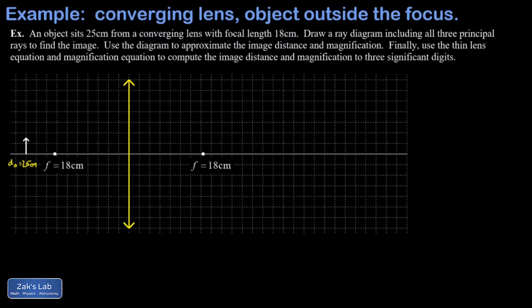We're asked to include all three principal rays, then use the grid to approximate the image distance and magnification. Finally, we'll use the thin lens equation and magnification equation to calculate the image distance and magnification, rounding to three significant figures. We start by getting in our principal rays.